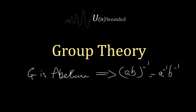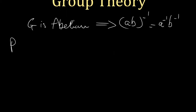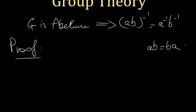Let's prove it. First, if G is abelian — every time you see abelian, you know it's commutative. So if G is abelian, then AB equals BA for all A and B in G. You can commute. Keep this in mind as we write the proof.